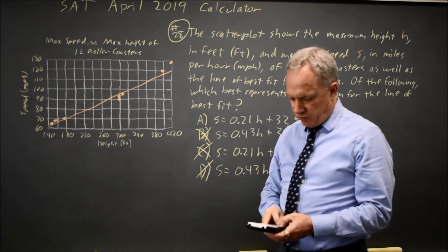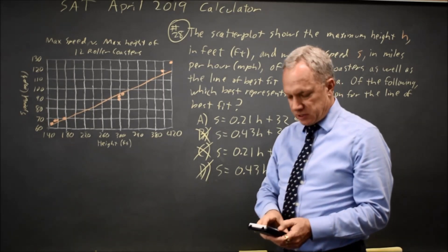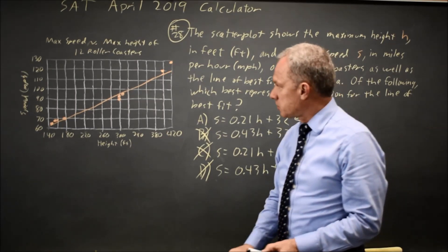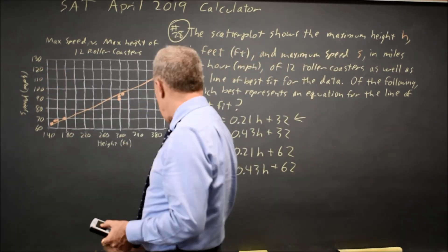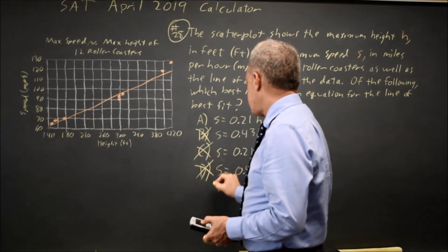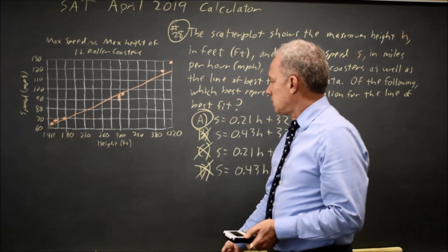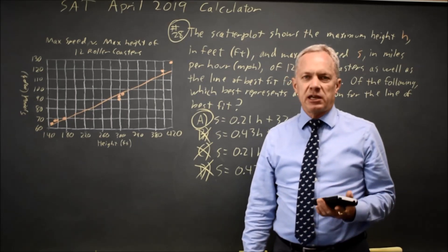Let's try choice D, 0.43x plus 62. And we know that's going to be pretty bad. And it's 122 up here. Again, choice D gets rejected for a second time. The only choice that comes close to our line is choice A.